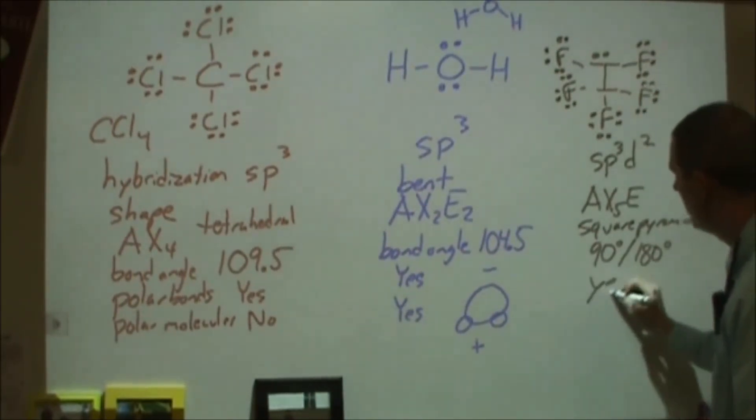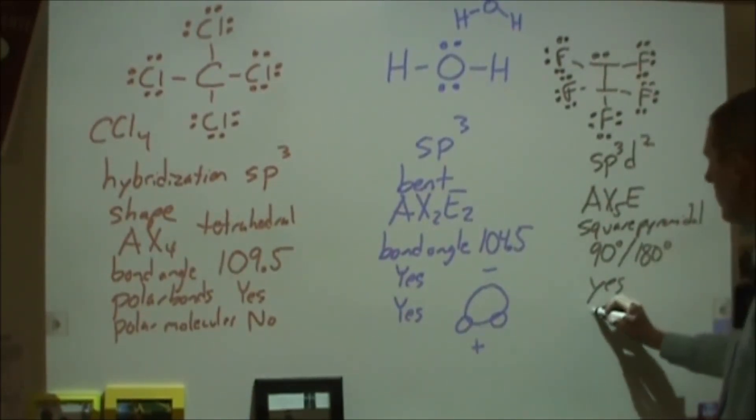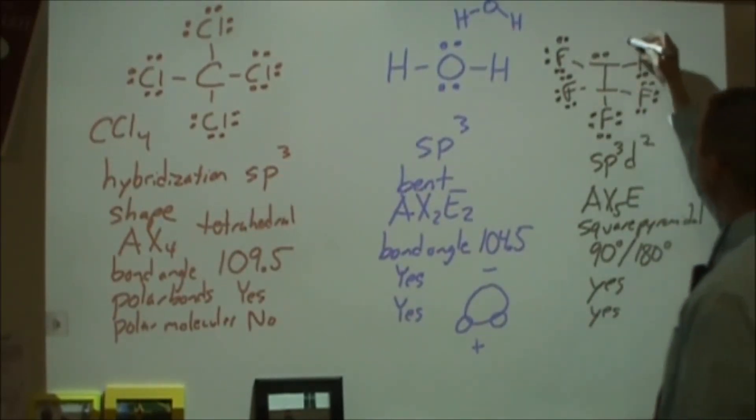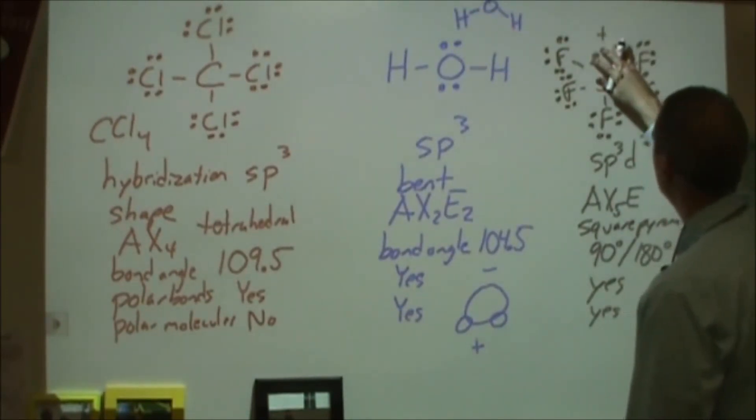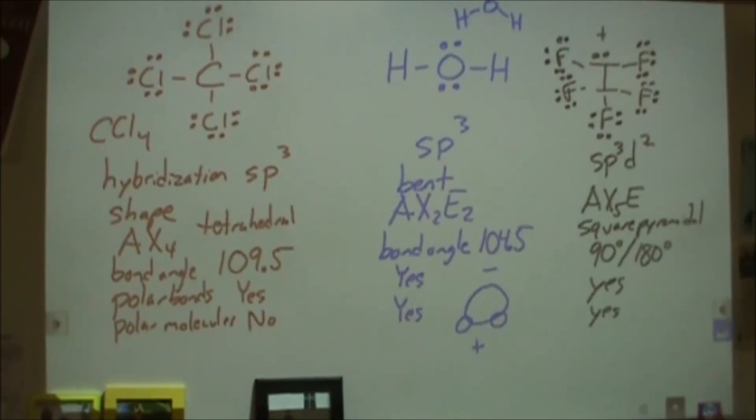Are there polar bonds on this thing? Yes, absolutely. Fluorine is much more electronegative than iodine. And is this a polar molecule? Yes. So we have polar bonds, and then because of that lone pair, that's going to be an asymmetrical molecule. So I can have a positive end up here by the iodine lone pair. And then I have a negative end down by this fluorine over here, and so that would be a polar molecule.